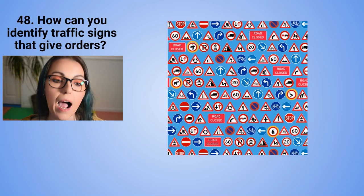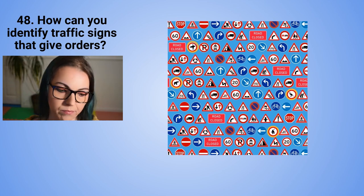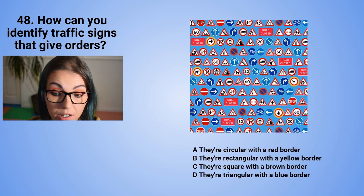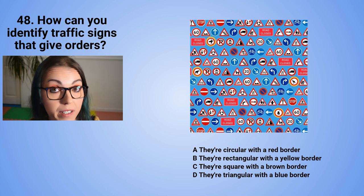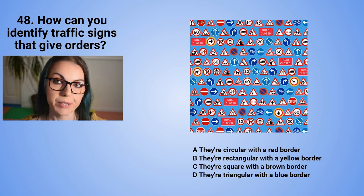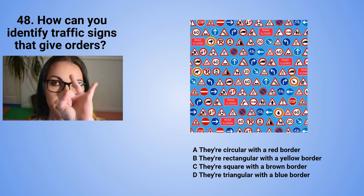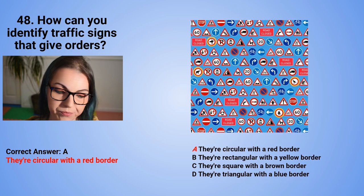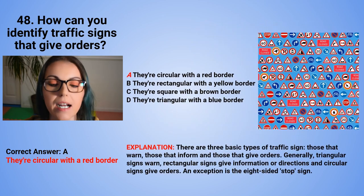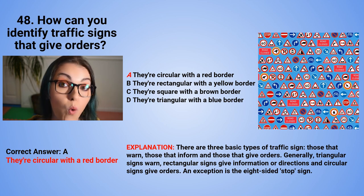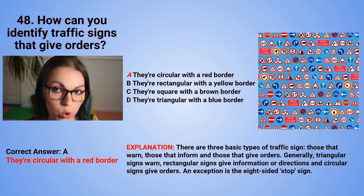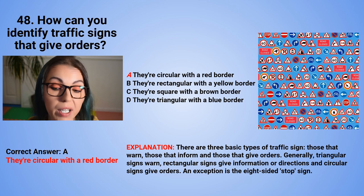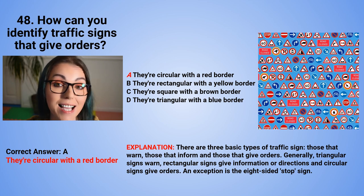Question 48: How can you identify traffic signs that give orders? A. They are circular with a red border. B. They are rectangular with a yellow border. C. They are square with a brown border. Or D. They are triangular with a blue border. The correct answer is A — they are circular with a red border. There are three basic types of traffic signs: those that warn, those that inform, and those that give orders. Triangular signs warn, rectangular signs give information or directions, and circular signs give orders. An exception is the eight-sided stop sign.